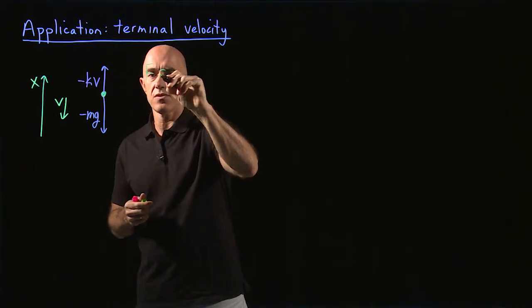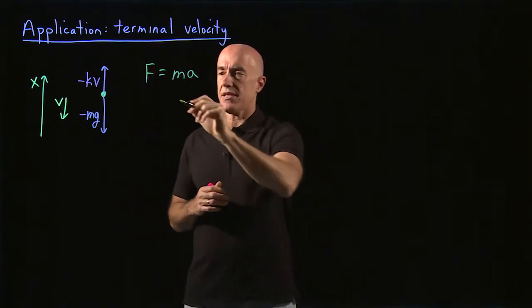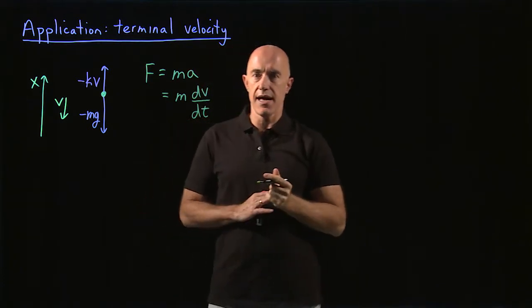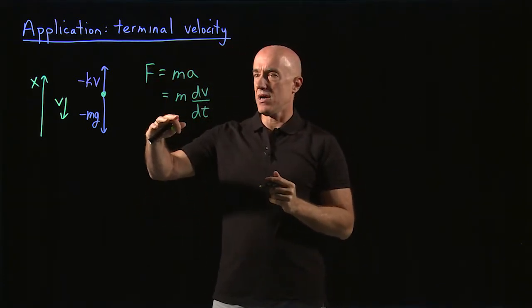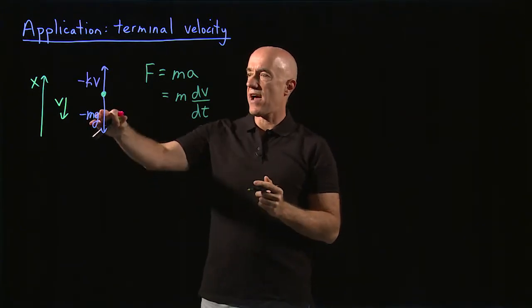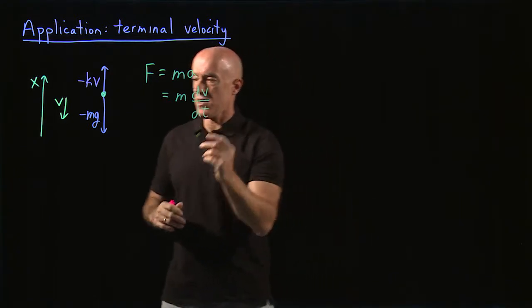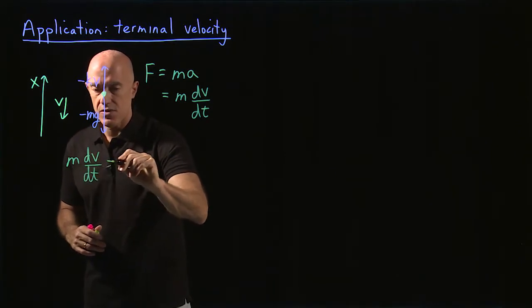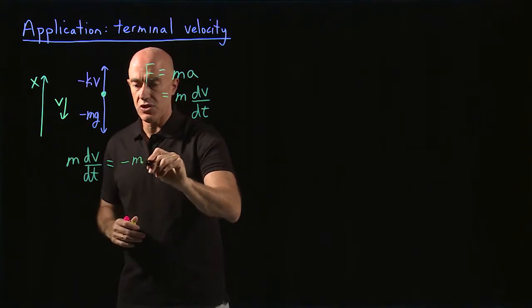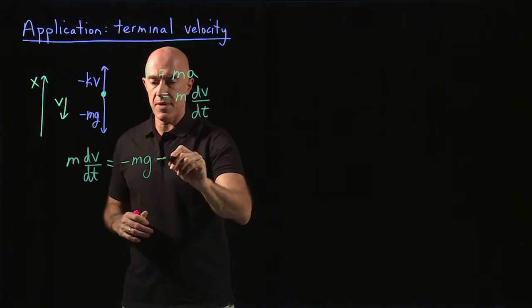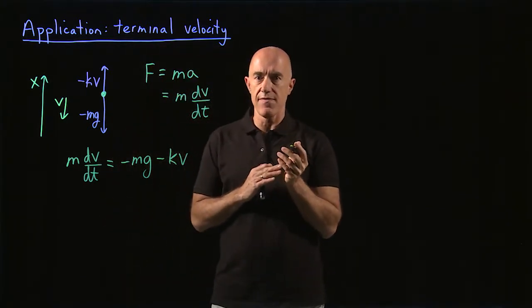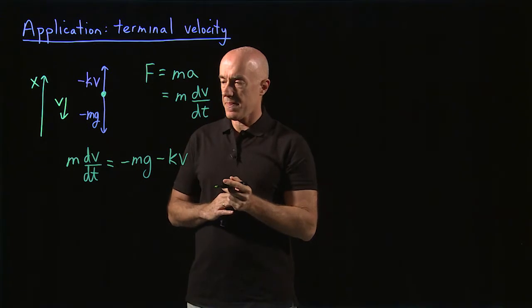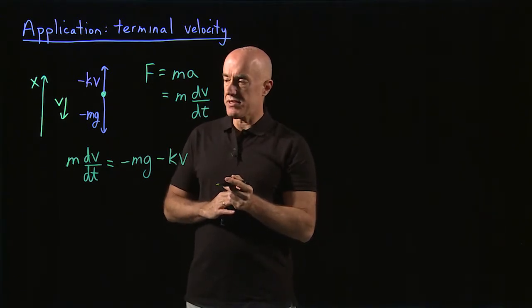So the force is equal to the mass times the acceleration. And the acceleration is going to be the change in the velocity with respect to time. And then we have to set the forces. So what are the forces here? Gravity and air resistance. So the differential equation then becomes m dv dt equals the forces, gravity minus mg, and air resistance minus kv. Remember that if the diver is falling, then minus mg is negative and minus kv is positive. This is our differential equation.